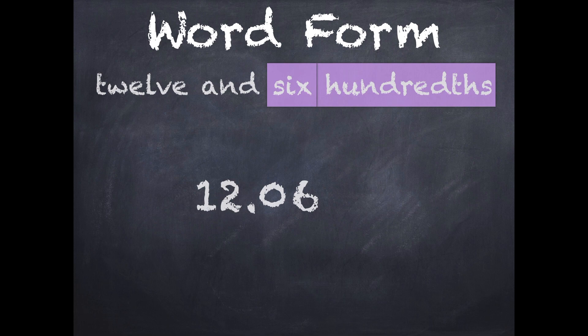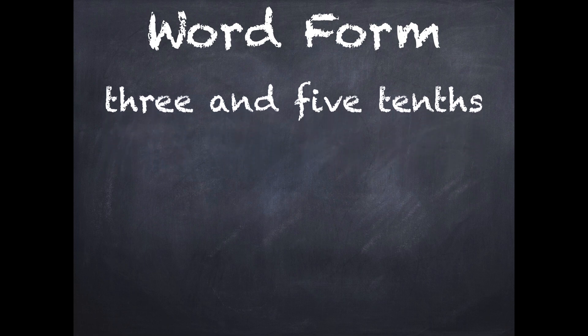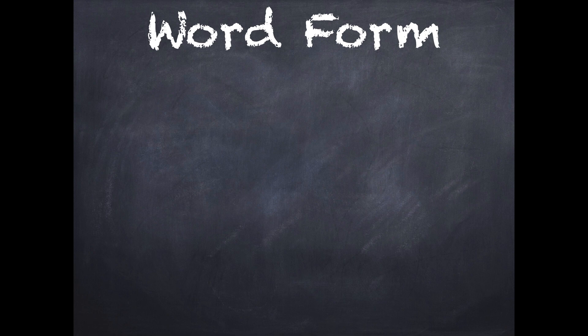Try this one on your own. Write this number using digits in standard form: three and five tenths. Well, that would be three and five, and the number ends in the tenths place. There you go. Three point five. Three and five tenths.